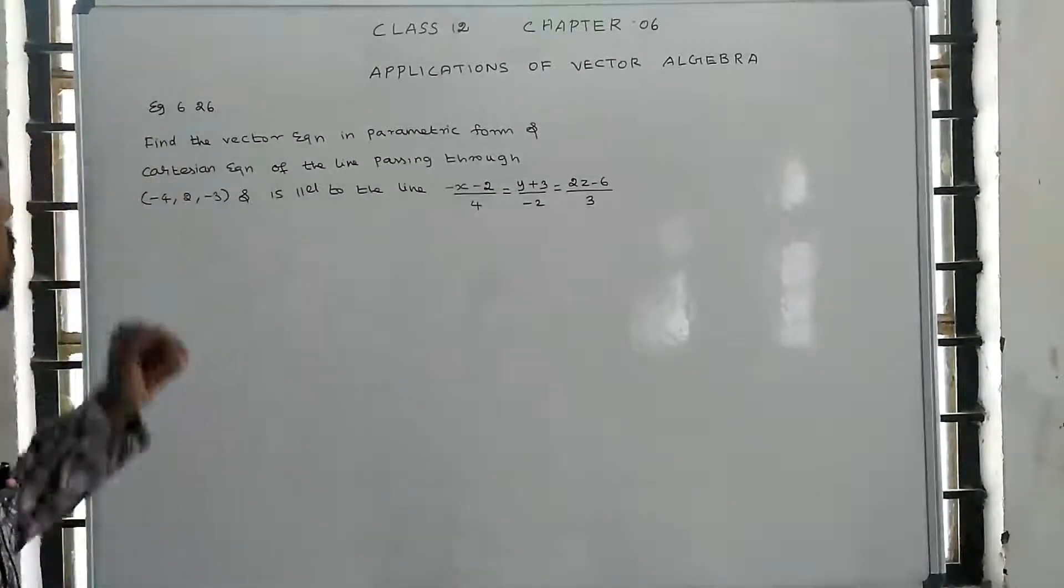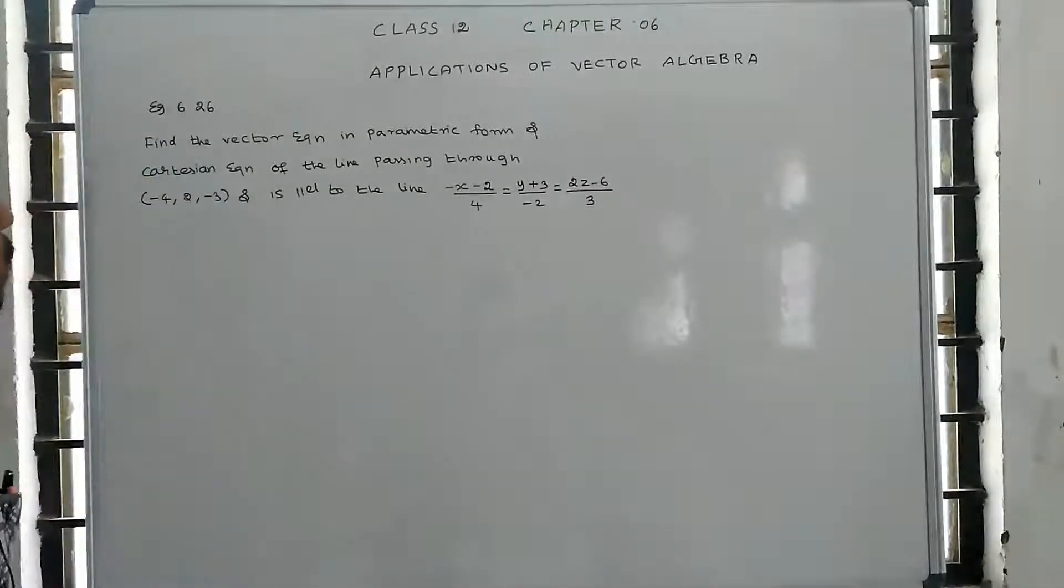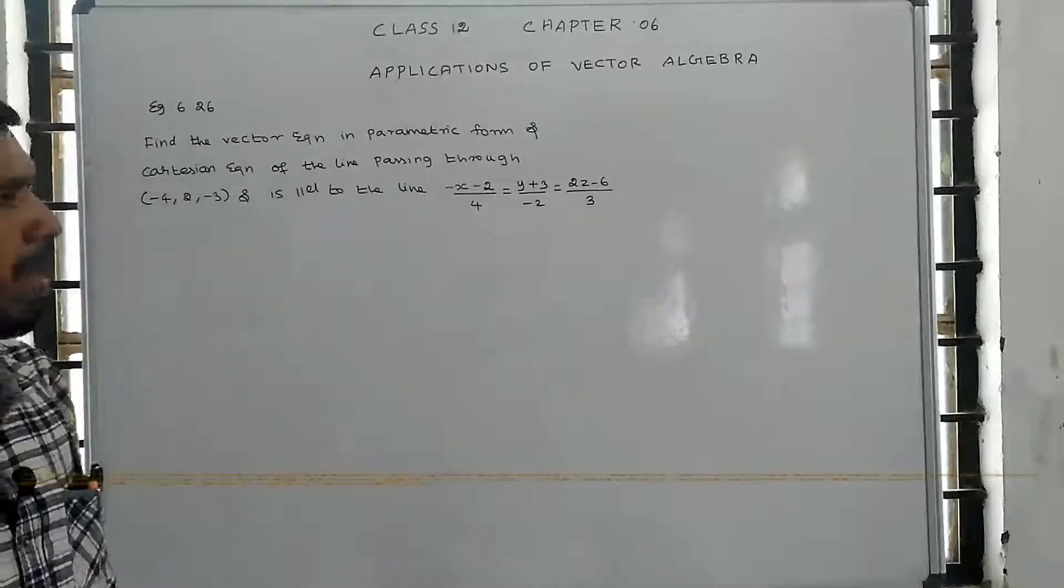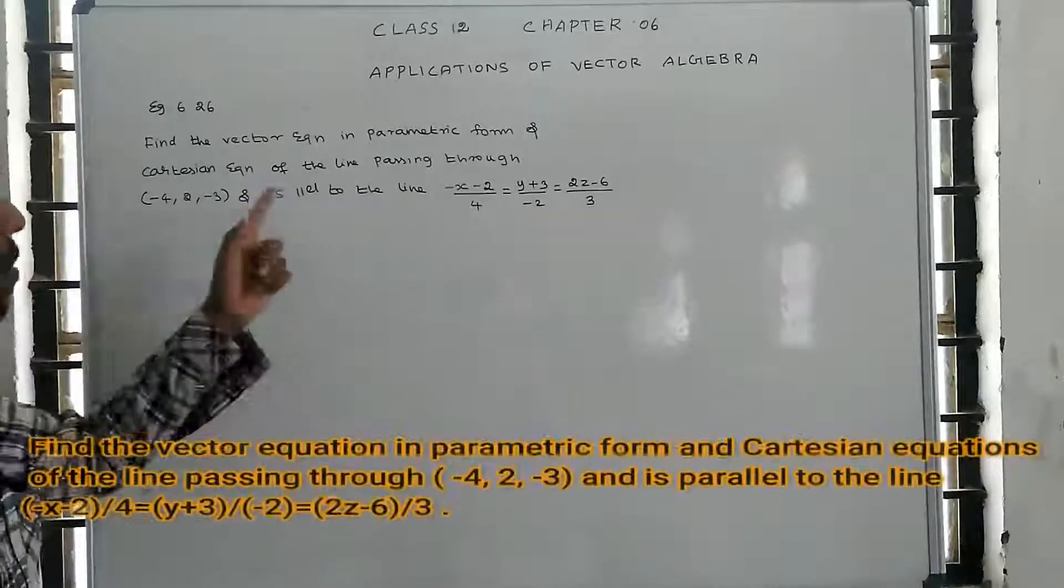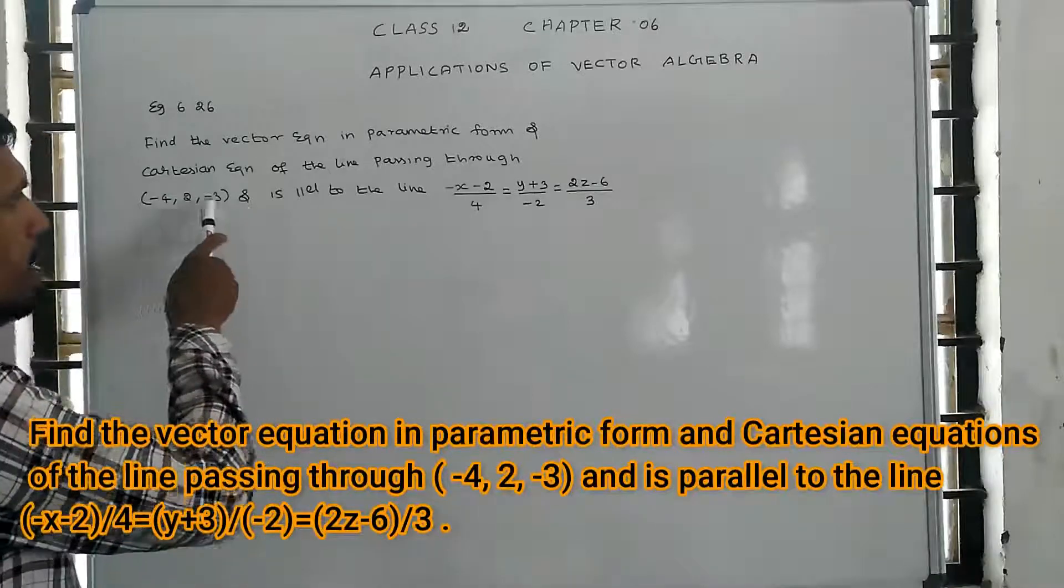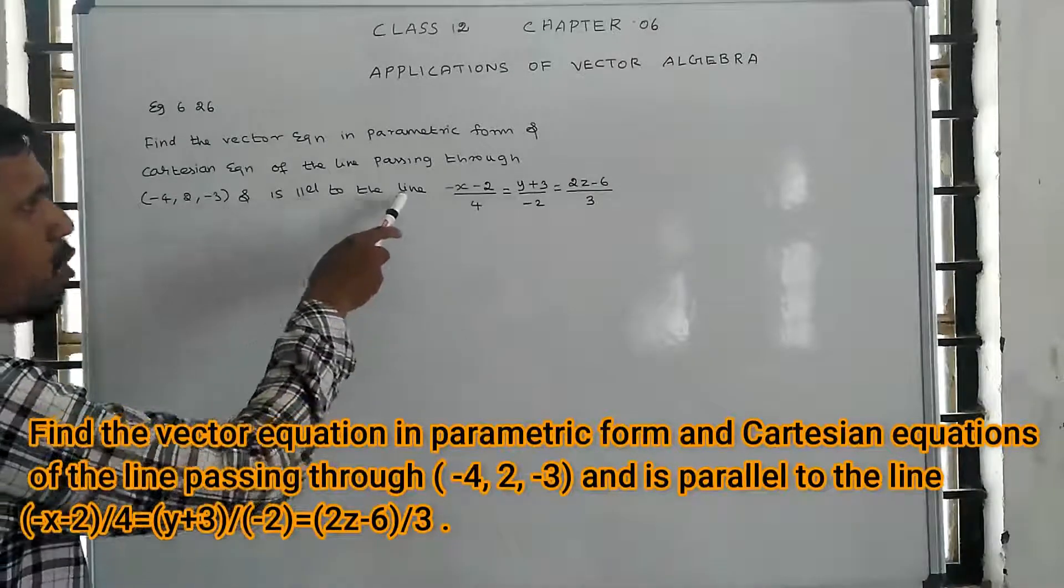Salaam alaikum students. Example 61.26: Find a vector equation in the parametric form and the Cartesian equation of the straight line passing through the point and parallel to the line.